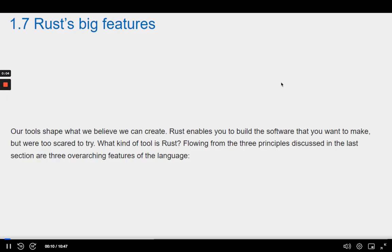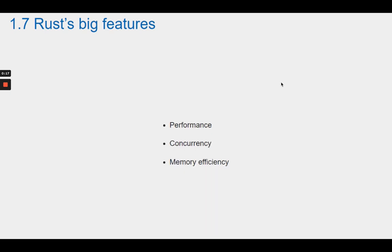Rust enables you to build the software that you want to make, but we're too scared to try. What kind of tool is Rust? Flowing from the three principles discussed in the last section are three overarching features of the language: Performance, Concurrency, and Memory efficiency.